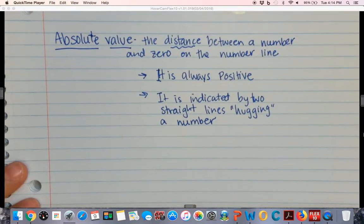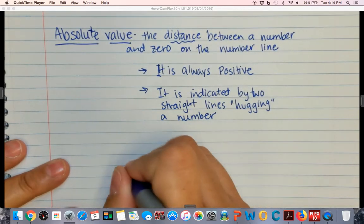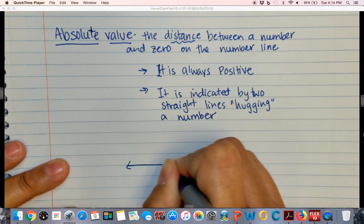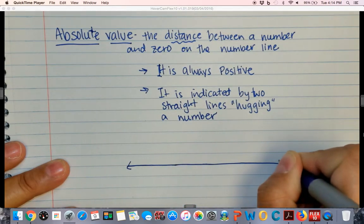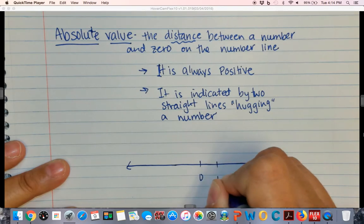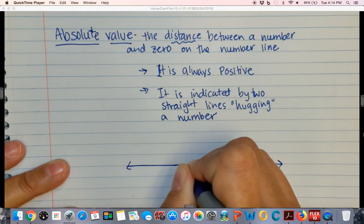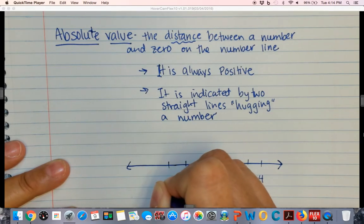Alright, so I'm going to show you very quickly. We're going to draw a short number line here for an example. And I'll start with 0 and go up to 4 and to negative 4.